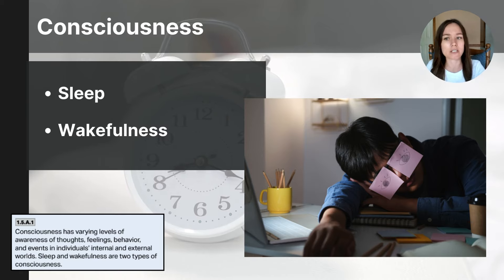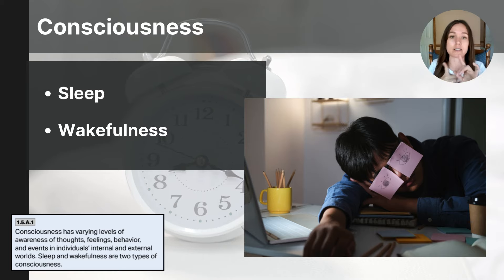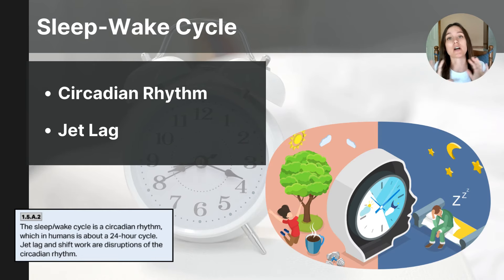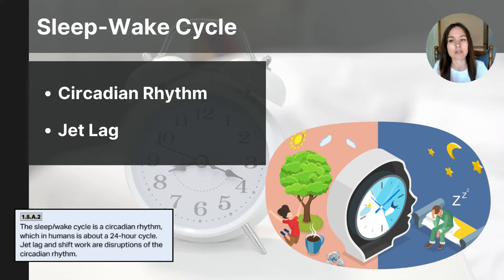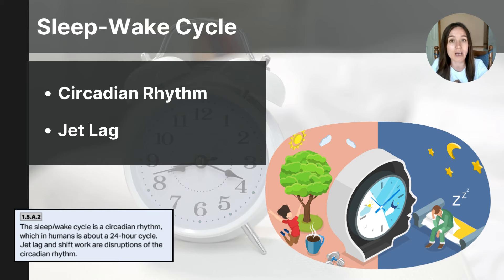Even hypnosis or meditation can alter consciousness. But with all that said, in this particular lesson, the College Board is concerned that you know the two states of consciousness: sleep and wakefulness. Our sleep and wake cycles are tied to an internal biological set of rhythms referred to as our circadian rhythm.